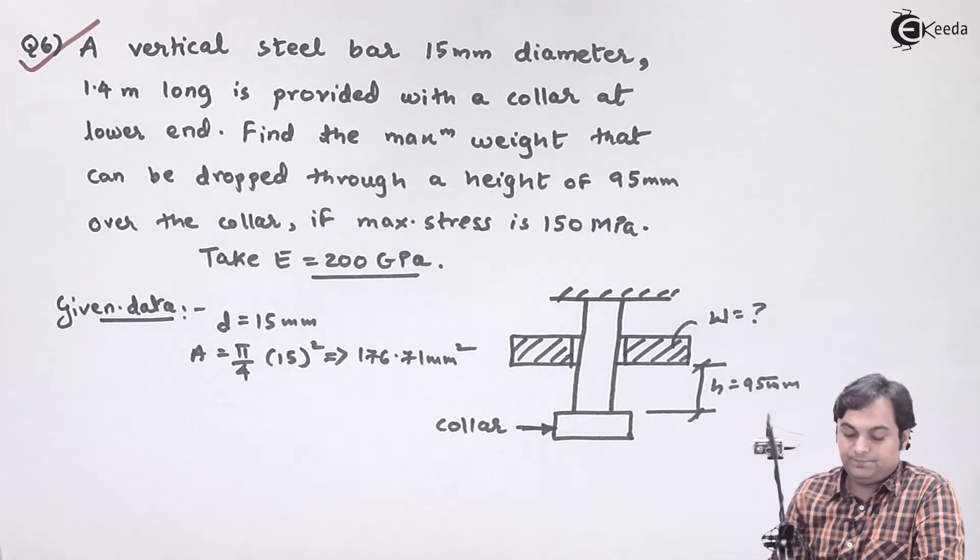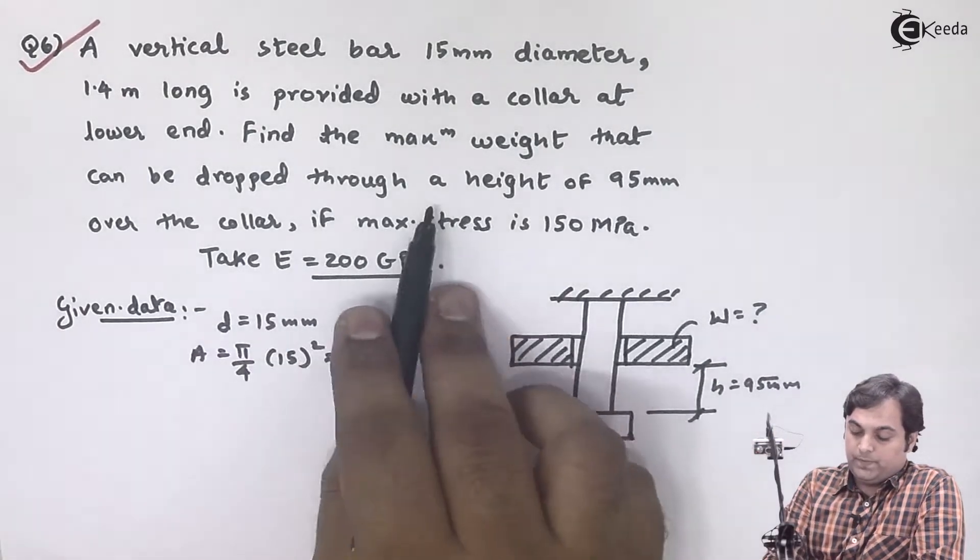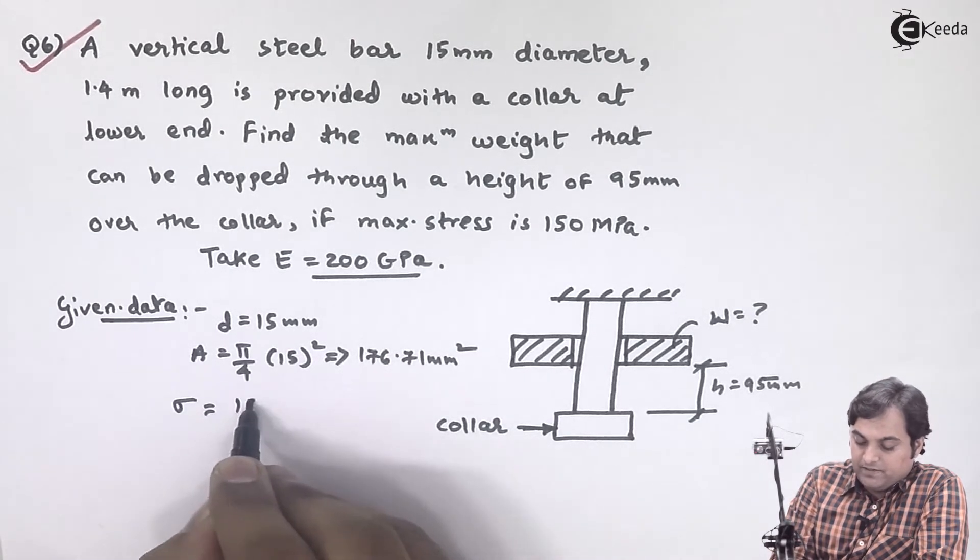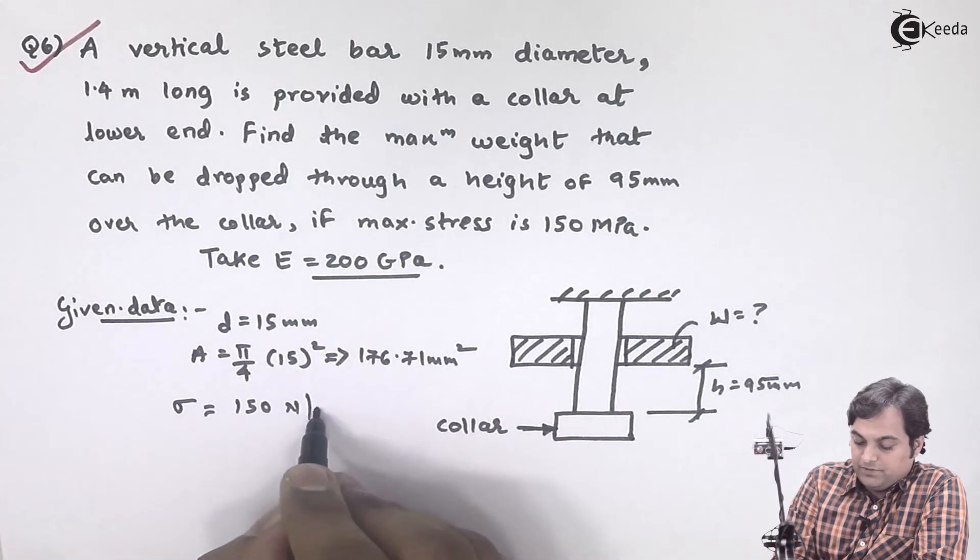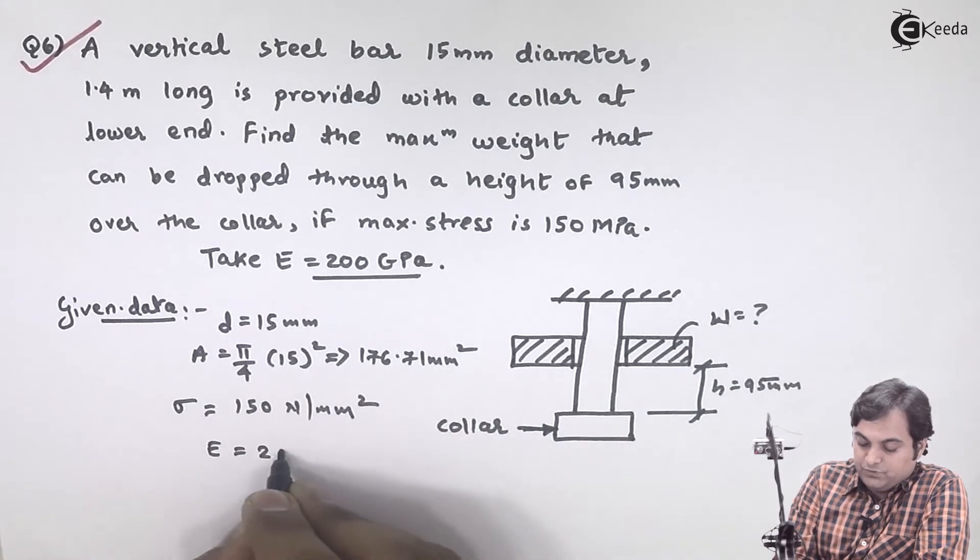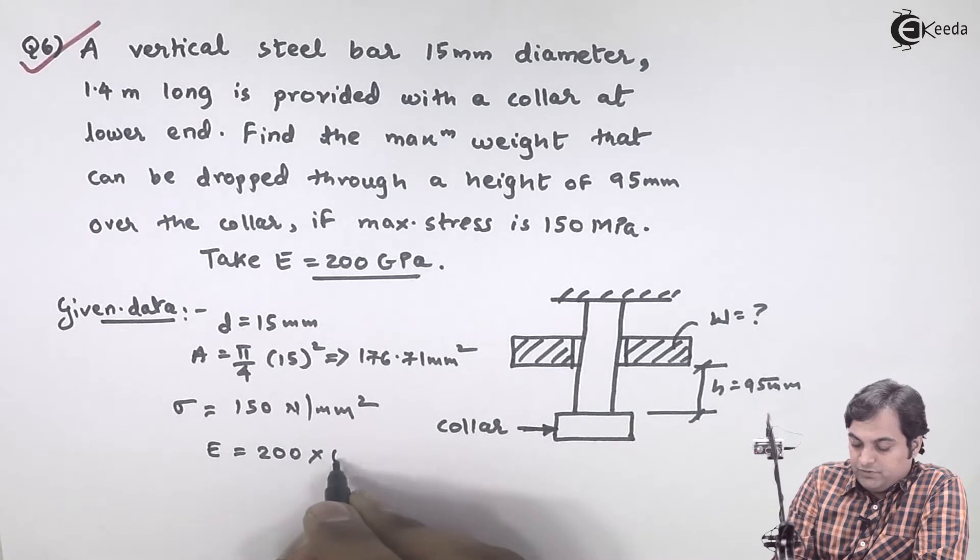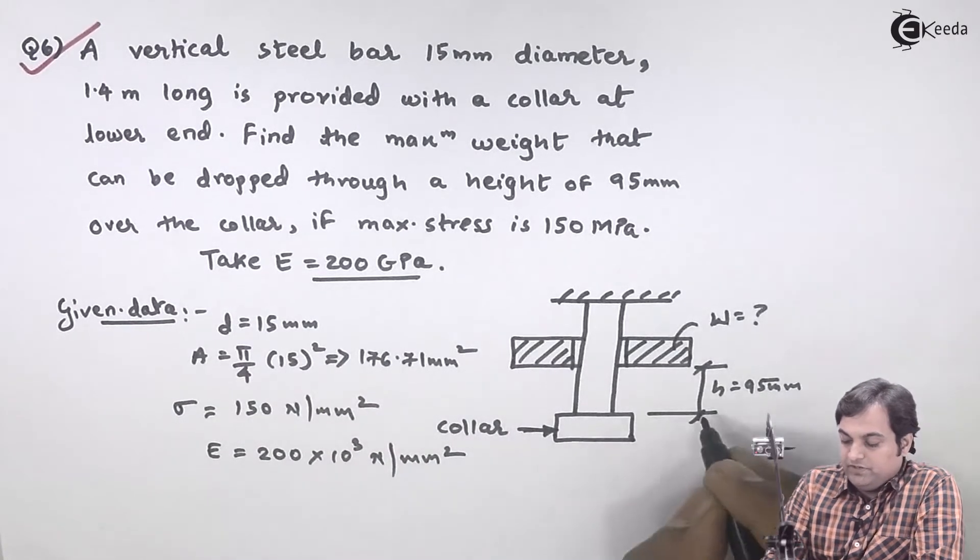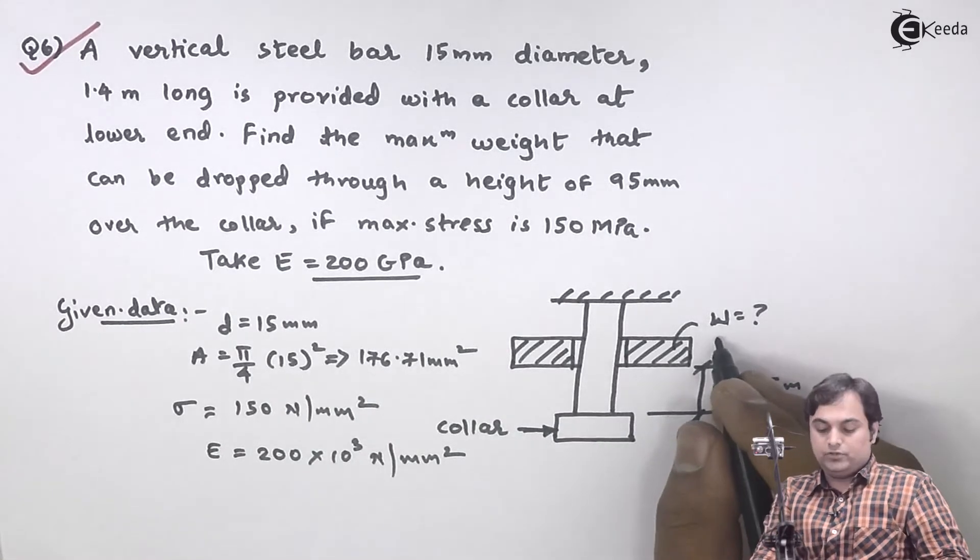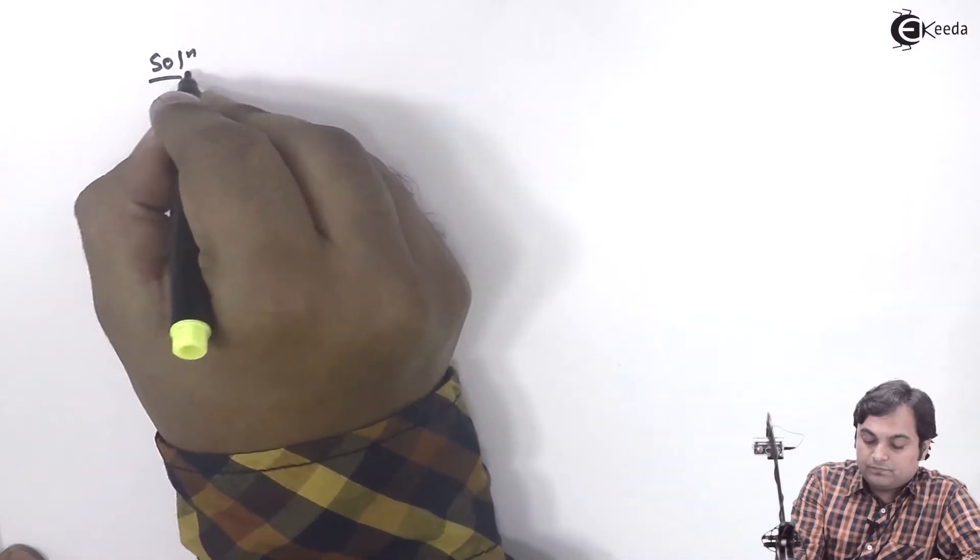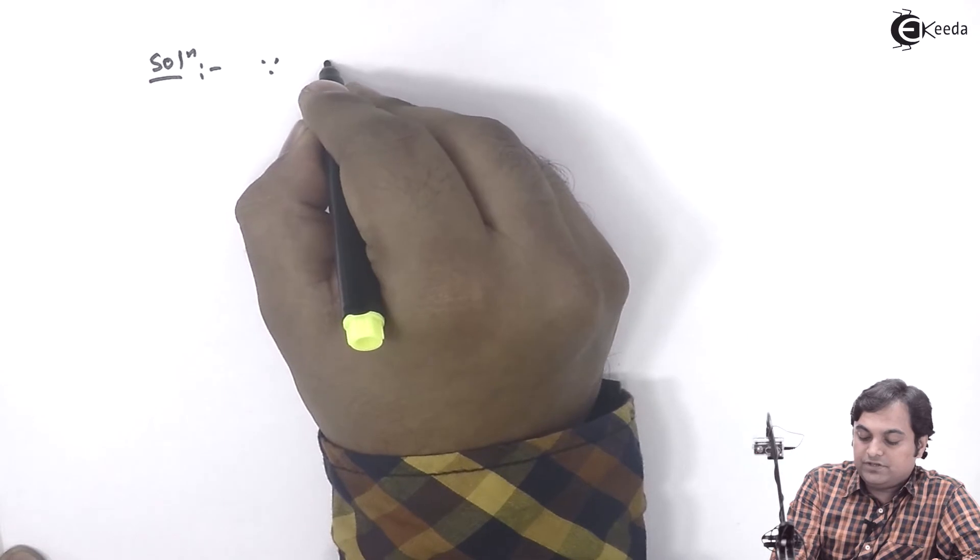the value of this weight if maximum stress is 150 MPa (N/mm²) and Young's modulus is 200 GPa = 200 × 10³ N/mm². We have to calculate the value of this load. I'll start the solution. The stress